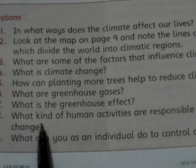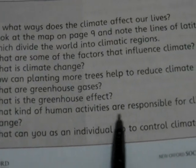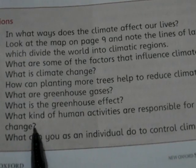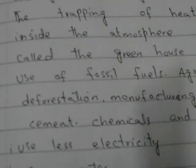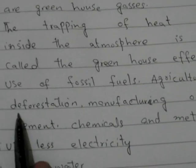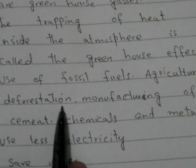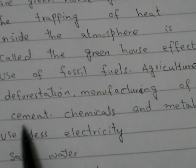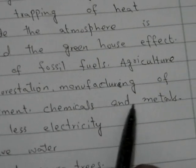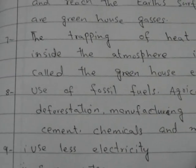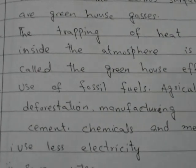Question eight: What kind of human activities are responsible for climate change? The answer is: use of fossil fuels, agriculture, deforestation, and manufacturing of cement, chemicals, and metals.